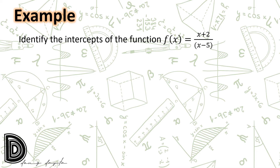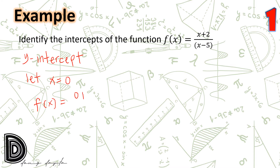Let us start finding the y-intercept of this rational function. At the y-intercept, x is equal to zero. Hence, we let x equal zero. So we have f(x) = (0+2) / (0−5), which equals negative 2 over 5. Therefore, the y-intercept of this function is at (0, −2/5).